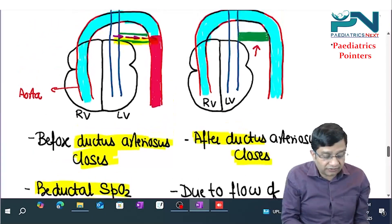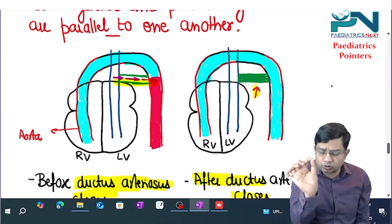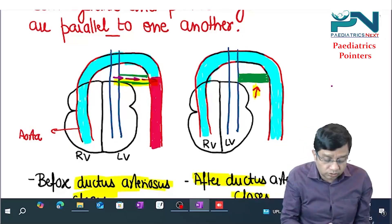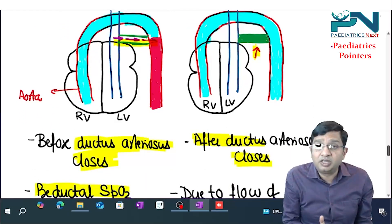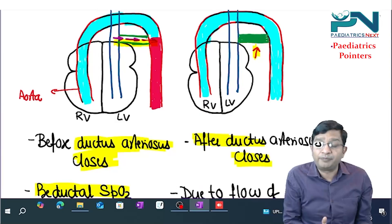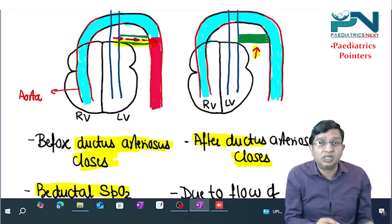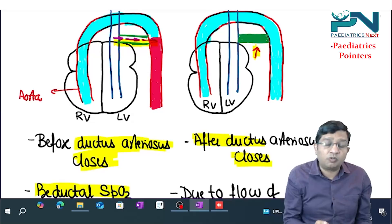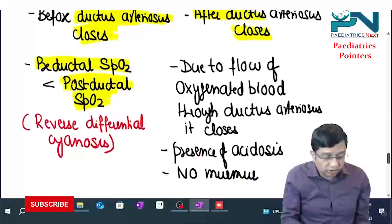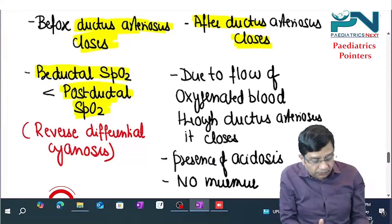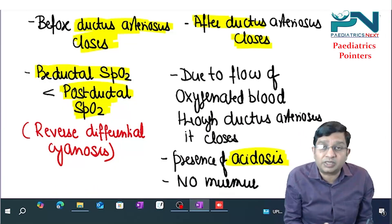After the ductus arteriosus closes — it closes because oxygenated blood flowing through it triggers closure — once closed, the arch of the aorta receives only deoxygenated blood. As a result, there is systemic acidosis and no murmur present.